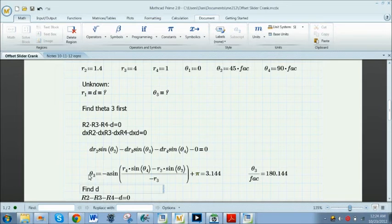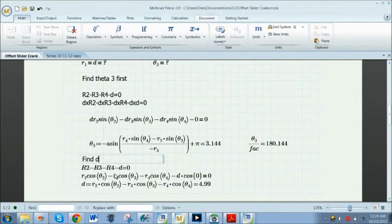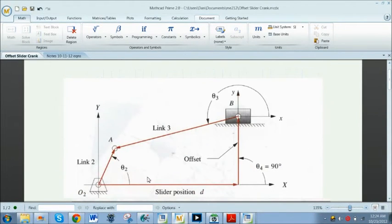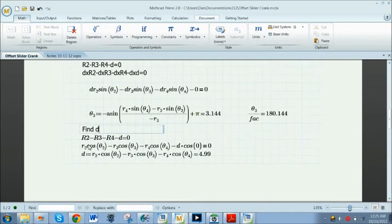The last step is to find D, and I just noticed that D is completely in the X components. The easiest thing for me was to say that the sum of the X component of each vector will add up to 0. So I know that if I do R2 cosine theta 2, R3 cosine theta 3, R4, etc., will give me the vector loop equation equal to 0.